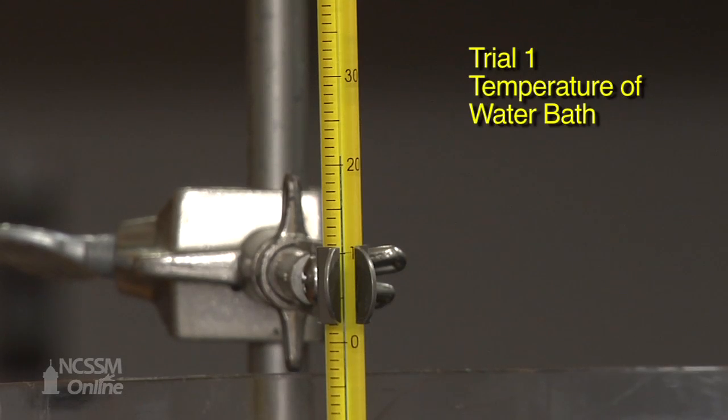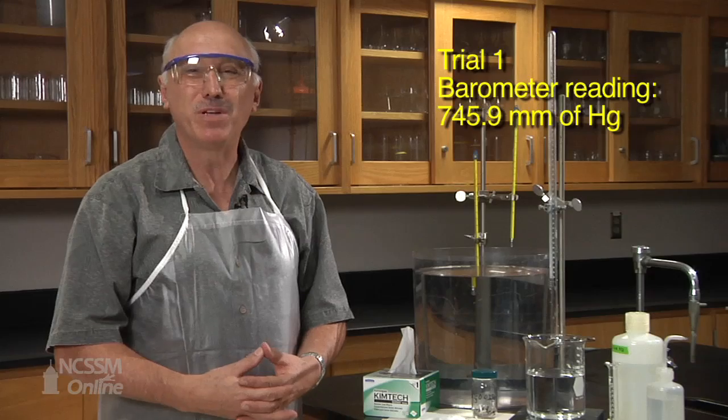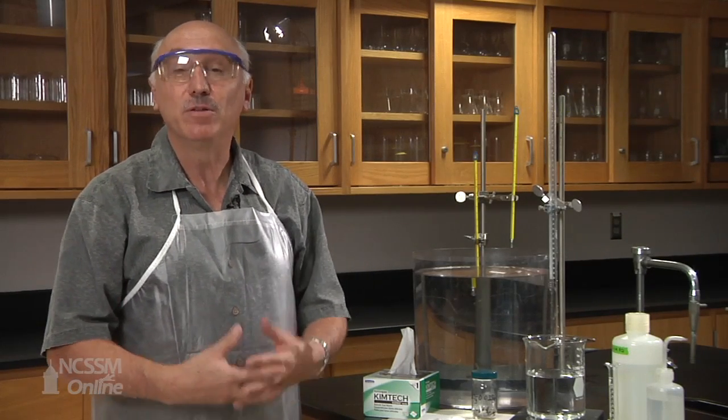Now, this is the water temperature reading, and now this is the room temperature. The atmospheric pressure for trial one is 745.9 millimeters of mercury. Now, we're going to repeat the same experiment two more times.